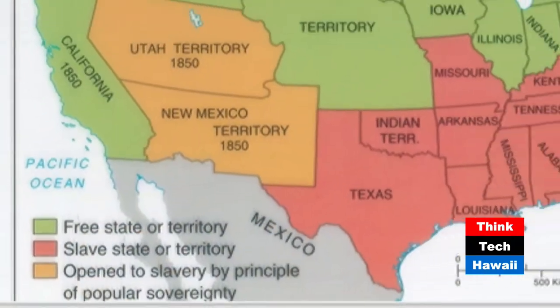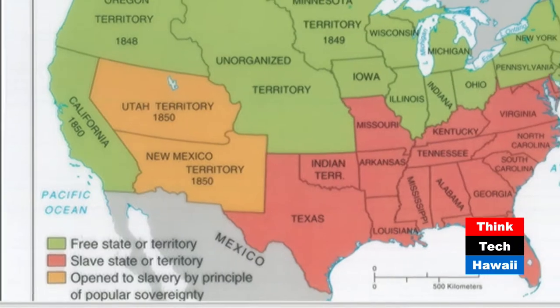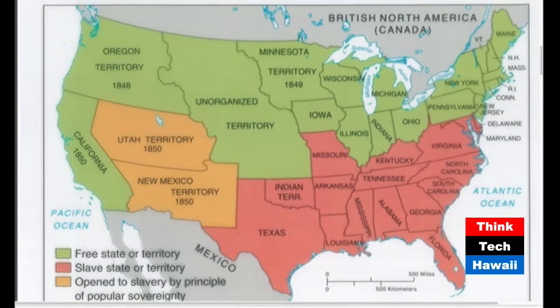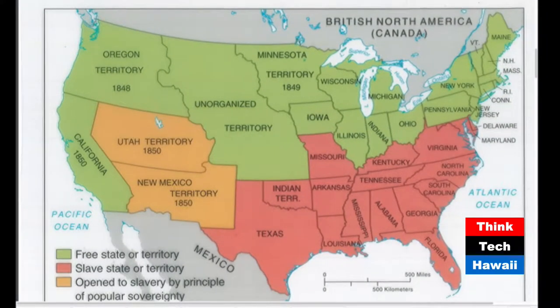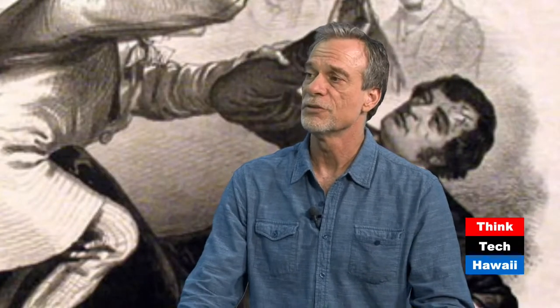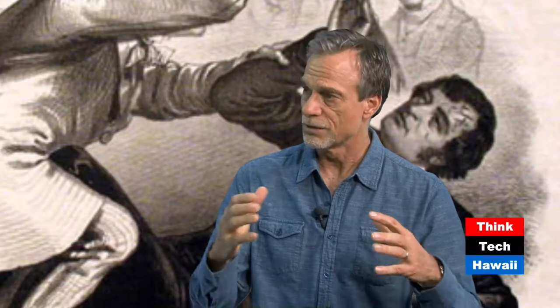Some famous American politicians stepped in — Henry Clay, Daniel Webster, and John C. Calhoun, who were all dottering in their old age; two of them die shortly after the Compromise is completed. They came to the Senate floor and gave impassioned speeches about the Union and about compromising. The Compromise of 1850 was the result.